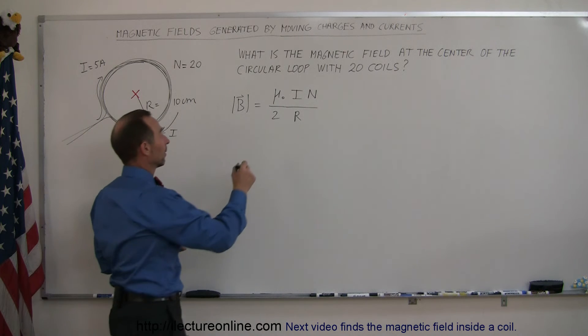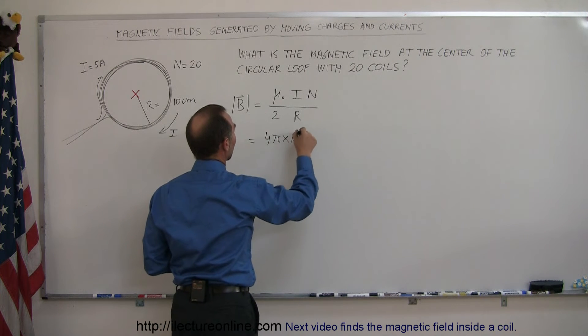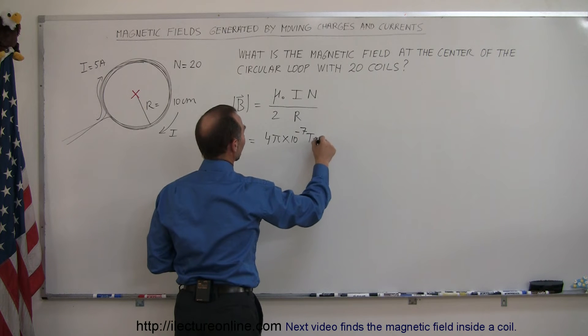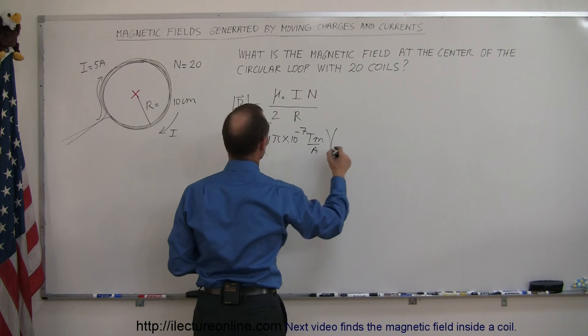So plug in the values. This is equal to 4 pi times 10 to the minus 7 teslas times meters per amps, multiply times the current, the current is 5 amps.